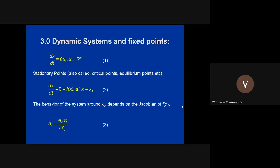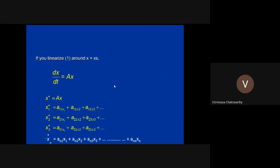Let us start with some basic ways of describing such dynamical systems. A general formulation: if x is your state vector, an n-dimensional vector in R^n, the dynamics can be written as dx/dt = f(x), where f(x) is also an n-dimensional vector function. We consider points where this derivative becomes zero, linearize there, and obtain the matrix e_ij given by ∂f_i/∂x_j.